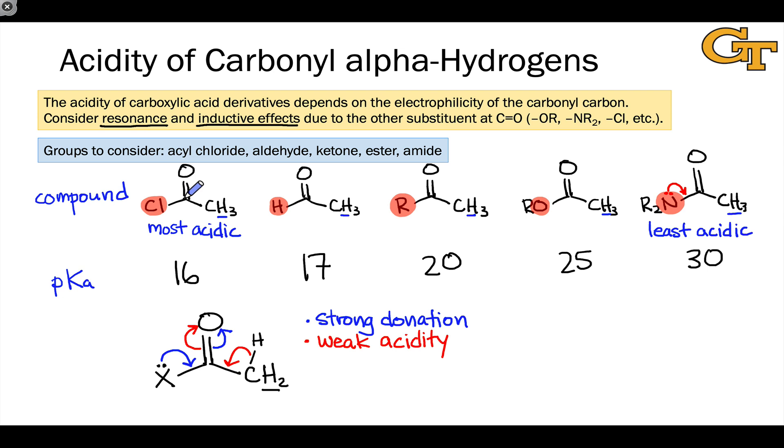So for example, if we use a blue circle to indicate the electrophilic strength of the carbonyl carbon, the most electrophilic is very clearly the acyl chloride, followed by the aldehyde, followed by the ketone, followed by the ester, and then the least electrophilic of all is the amide. It's this decreasing electrophilicity of the carbonyl carbon due to donation from the attached substituent that leads to the observed trend in Bronsted acidity of the alpha carbons.